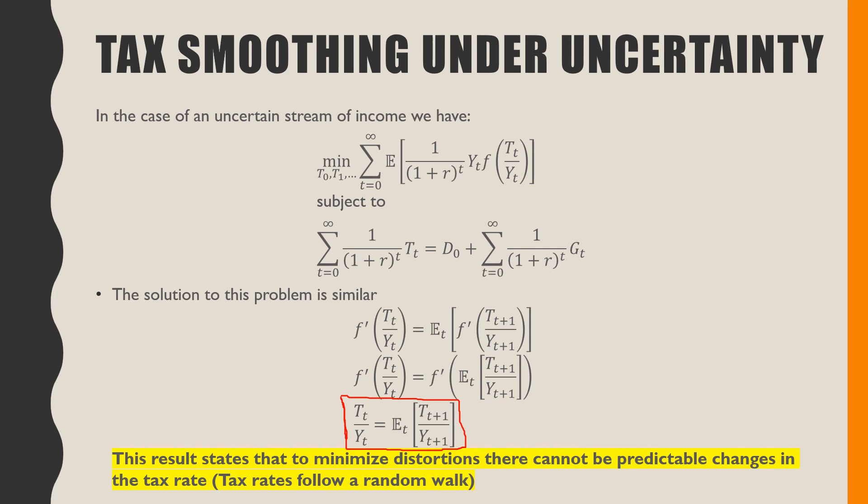The main takeaway I want you to walk away with from this idea of tax smoothing is that we can evaluate efficient tax policy in terms of its production of deadweight loss. This is our third part in our series on budget deficits and fiscal policy. I will see you in the next video where we talk about strategic debt accumulation. Take care.